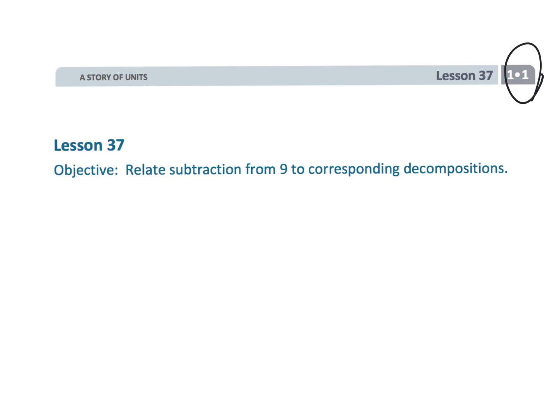And that wraps up first grade module one lesson 37 where it says relate subtraction from nine to corresponding decompositions but really we're basically finding number partners that equal nine.